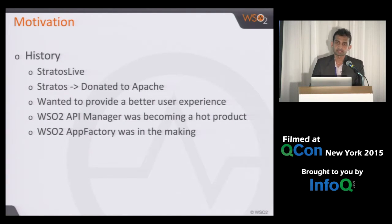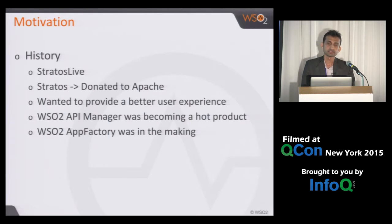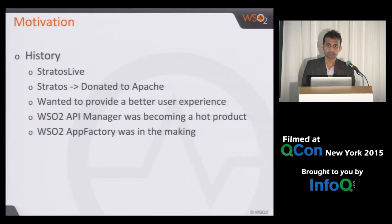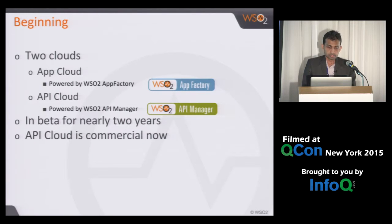At the beginning, we built it as a preview — meaning there's no guarantee that user data will be there; we might clean it from time to time. We ran it for about six months as a preview, then launched it as a beta in June 2014. We kept it in beta for one year. The App Cloud is still in beta because we want to improve some parts, but we commercially launched the API Cloud. You can now go to the API Cloud, create an account, and start using it.